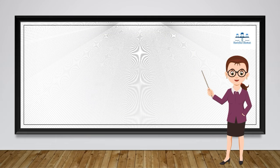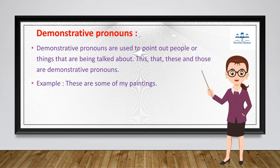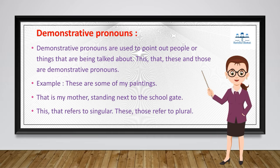Demonstrative pronouns are used to point out people or things we are talking about. The demonstrative pronouns are: this, that, these, and those. For example: 'These are some of my paintings' — we use 'these' to point out the paintings. 'That is my mother standing next to the school.' — we use 'that' to point out the mother. Note: 'this' and 'that' refer to singular nouns, while 'these' and 'those' refer to plural nouns.